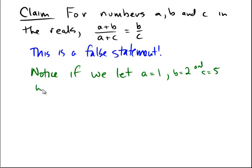We see that A plus B over A plus C would be equal to 1 plus 2 over 1 plus 5, which would be equal to 3 over 6, i.e. 1 half.